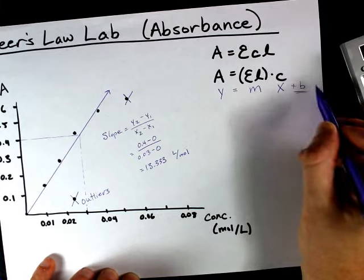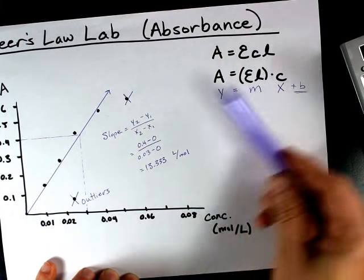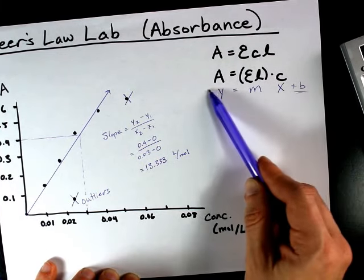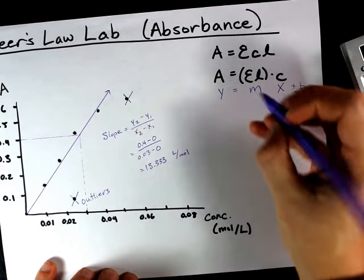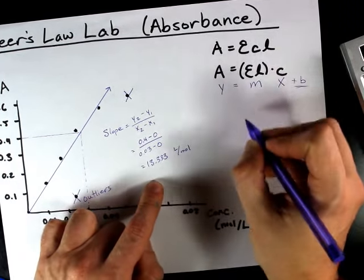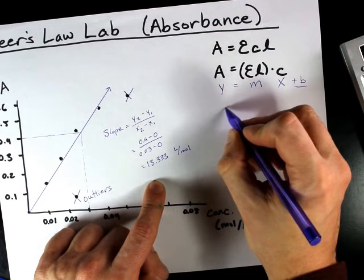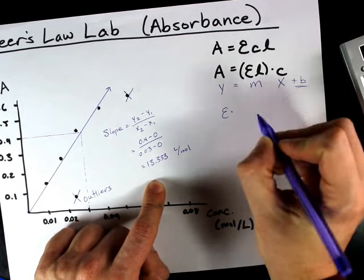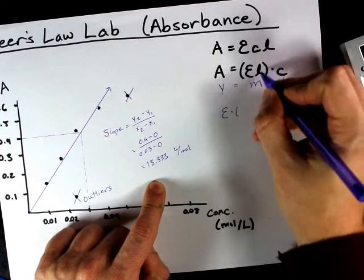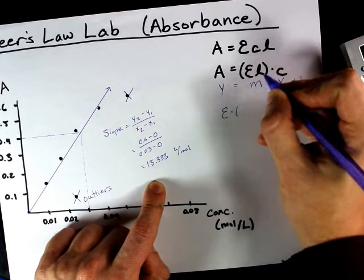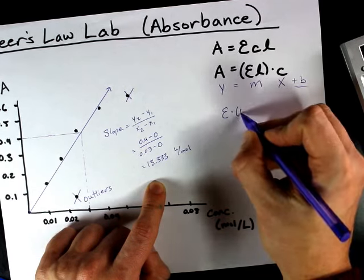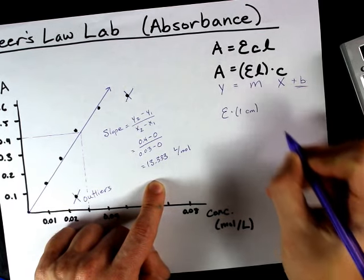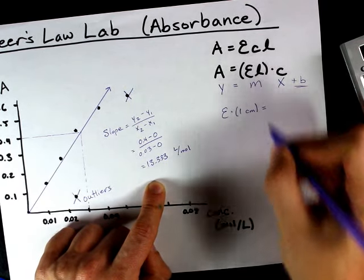Now, again, I fixed my y-intercept to be 0. And there is no y-intercept when you plot data according to this type of graph. Now, what that means is that my E times L, my molar absorptivity constant, times the path length of the cell. I've never done a spectrophotometry experiment where my path length wasn't one centimeter equals your slope.